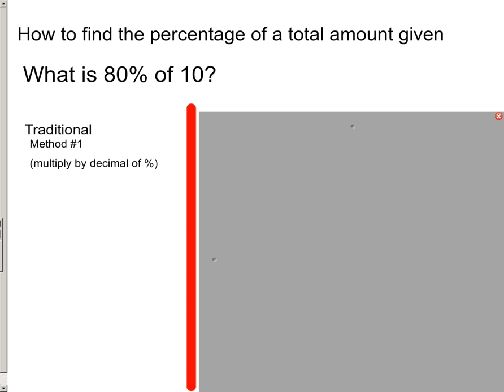I'm just going to call it the traditional method. It's where you take a look at what the percent is, and you're given the total amount, and we want to figure out a certain percentage of 10. So 80% would be turned into a decimal. So 80% becomes 0.8. And then we multiply it by the total amount, which was 10. And 10 times 0.8 becomes 8.0. So basically it's 8. What's 80% of 10? It's 8.